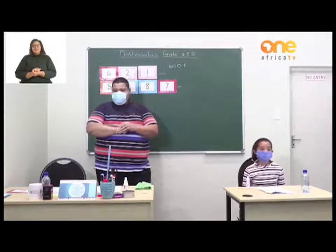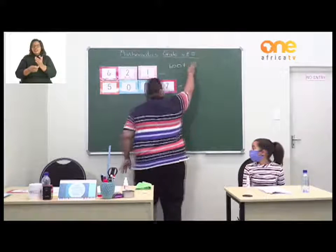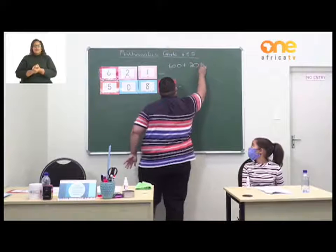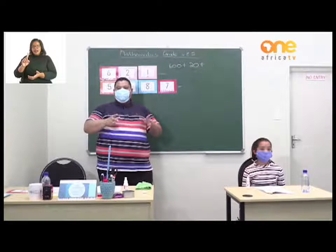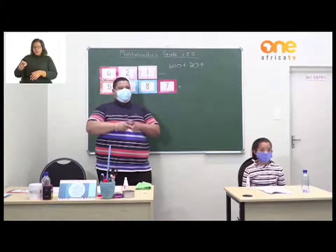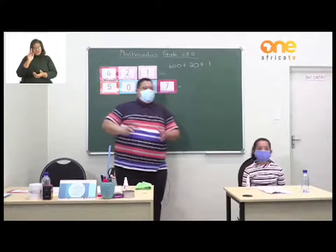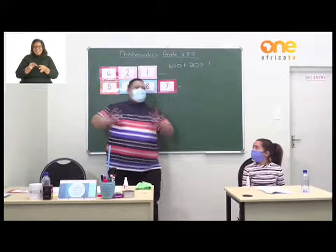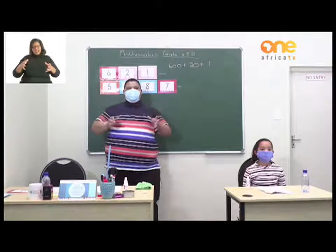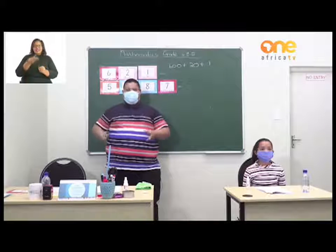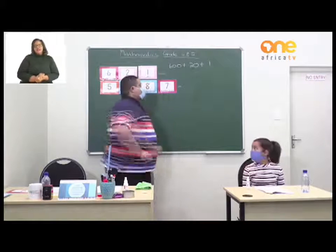So we write 600. What is the value of the 2? The 2 is in the place of the tens, so the value is 20. Plus the value of the 1 — the 1 is in the units place, giving a value of 1. So that's one way of writing expanded notation: 600 plus 20 plus 1.